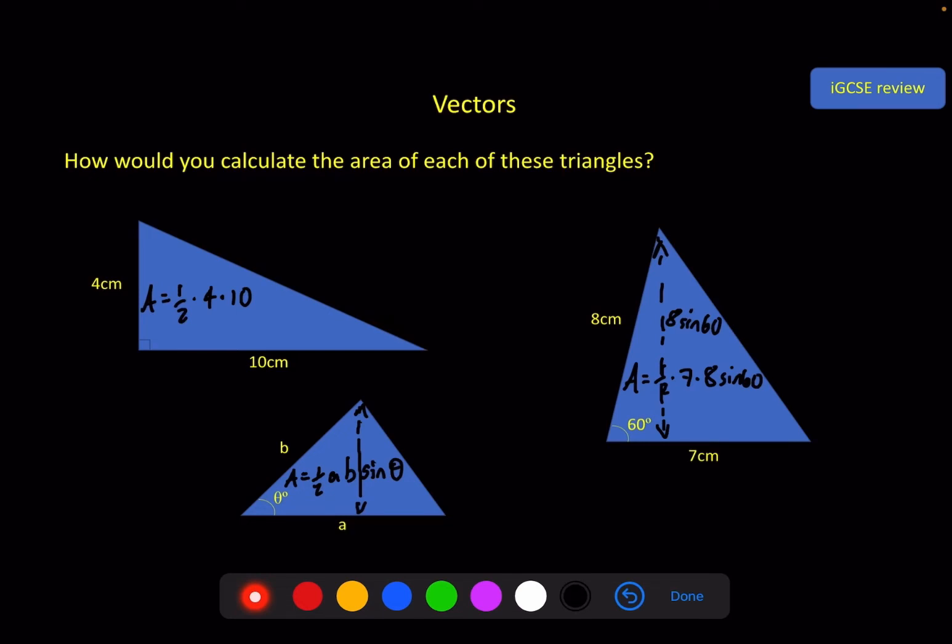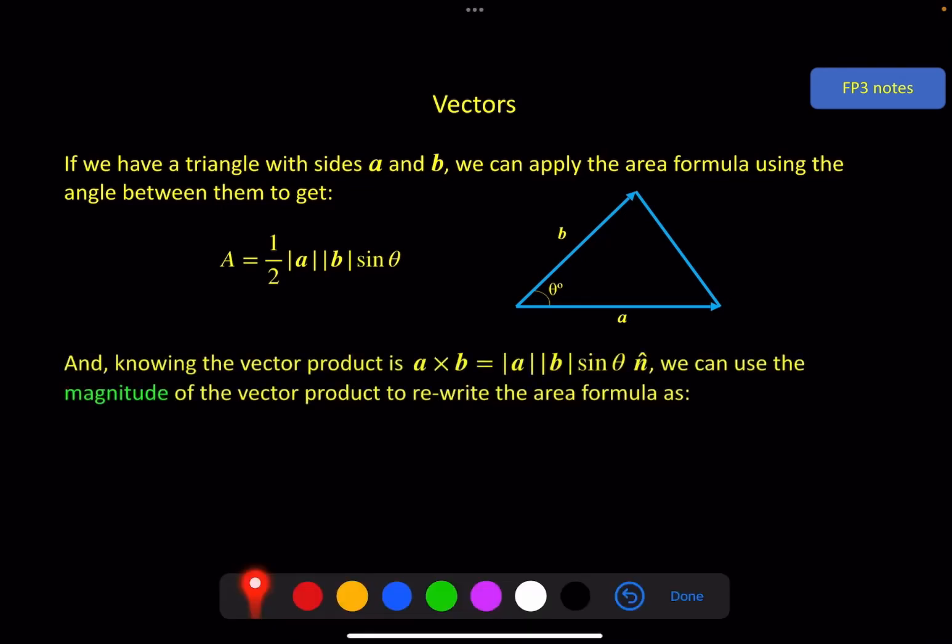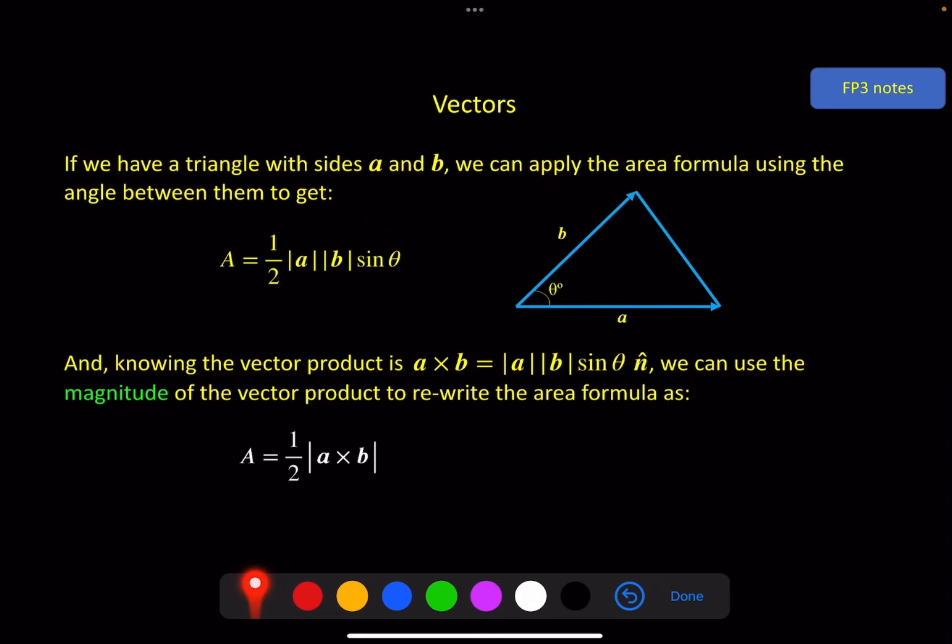This is useful because of how this connects with what we've been talking about. If we have vectors a and b and use these as two sides of a triangle, we can apply that formula again. We get half times the magnitude of a, the length of this, times the magnitude of b, the length of this, times sine theta, which is something you should recognize from the previous video. The vector product—if we want to get rid of this little vector element, this is a unit vector—so we can take the magnitude of both sides and end up with magnitude a, magnitude b, sine theta. Using the magnitude of this, we can rewrite the area formula for a triangle in terms of a vector product, where the two vectors are the two sides of the triangle.